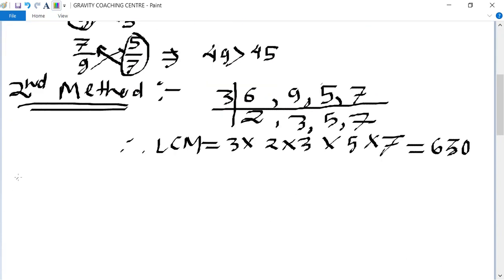So first fraction is 7 by 6. 7 by 6 equal to 630 divided by 6, this one is 105, and 105 times 7 equal to 735 upon 630.